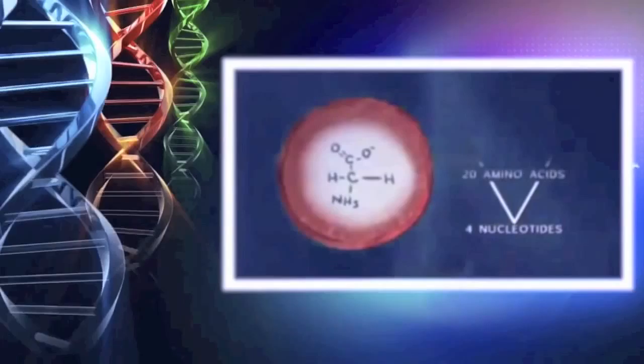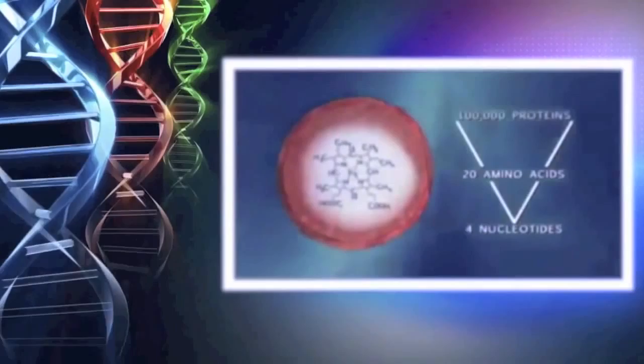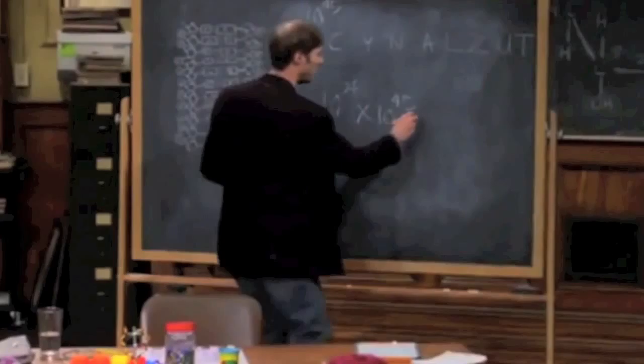Four basic units, called nucleotides, combine into a code for 20 amino acids. From those few amino acids, the body forms more than 100,000 proteins.